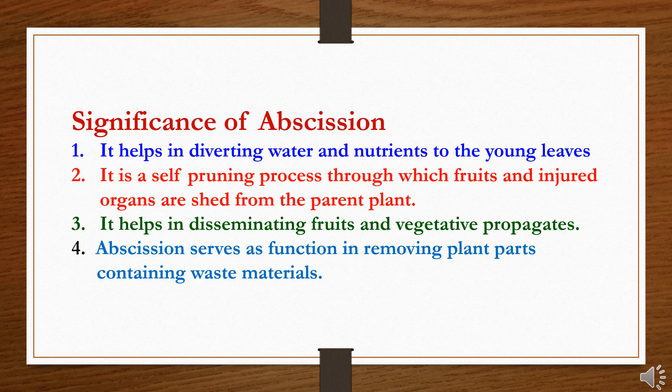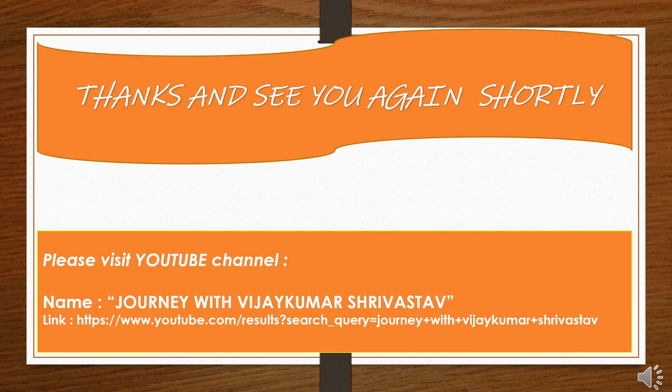Significance of abscission: first, it helps in diverting water and nutrients to young leaves. Second, it is a self-pruning process through which fruits and injured organs are separated from the parent plant. Third, it helps in disseminating fruits and vegetative propagules. Fourth, abscission serves a function in removing plant parts containing waste materials. This was all about senescence and abscission. Thank you very much. Please visit my YouTube channel, Journey with Vijaykumar Srivastava — the link is provided. Please subscribe and provide your kind and valuable feedback.